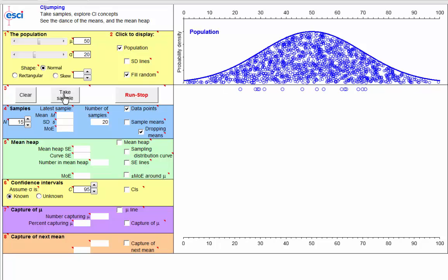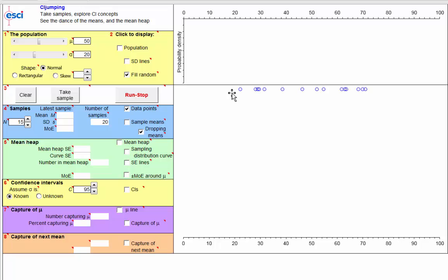Note that we're running a simulation in the computer, so we're privileged. We can see the population. Usually, a researcher only sees a single sample, and that's all we have to go on.